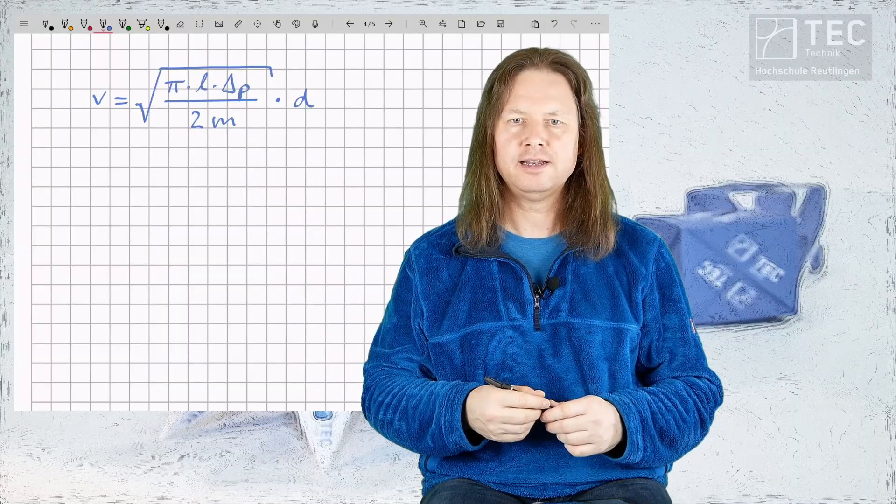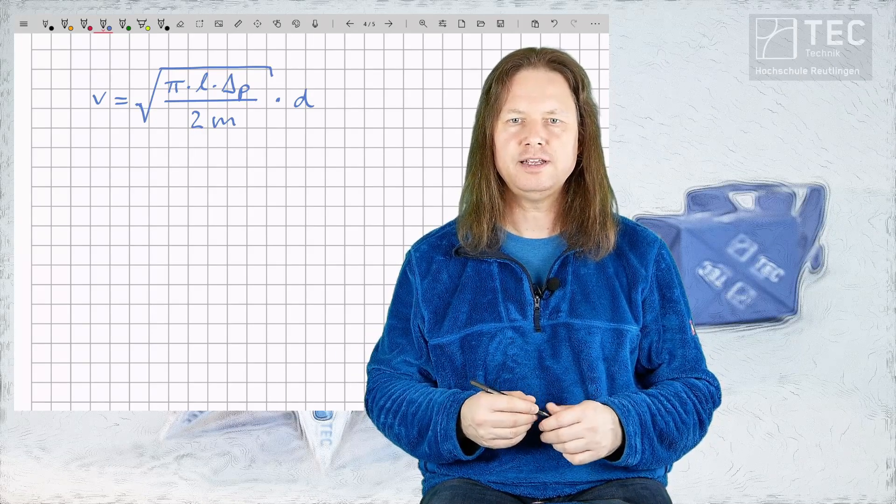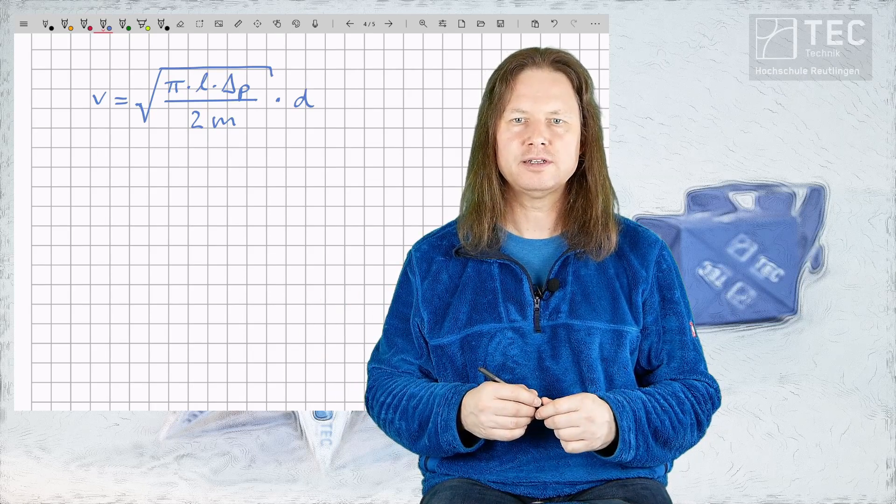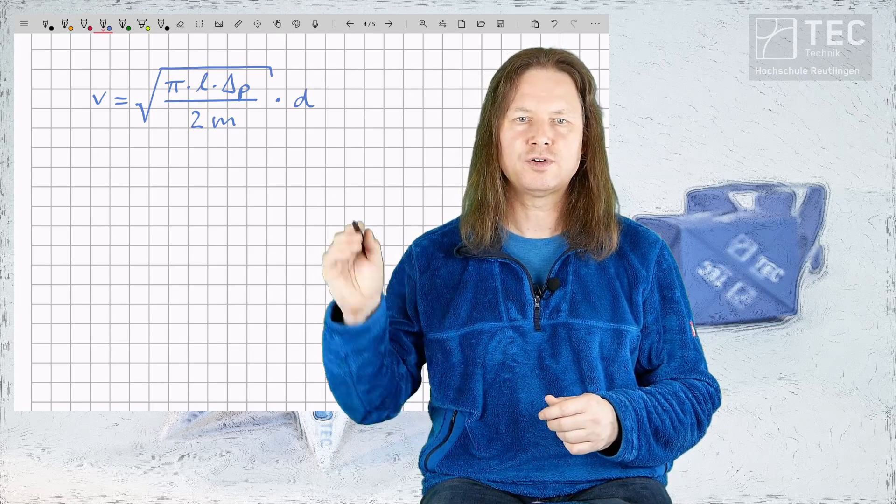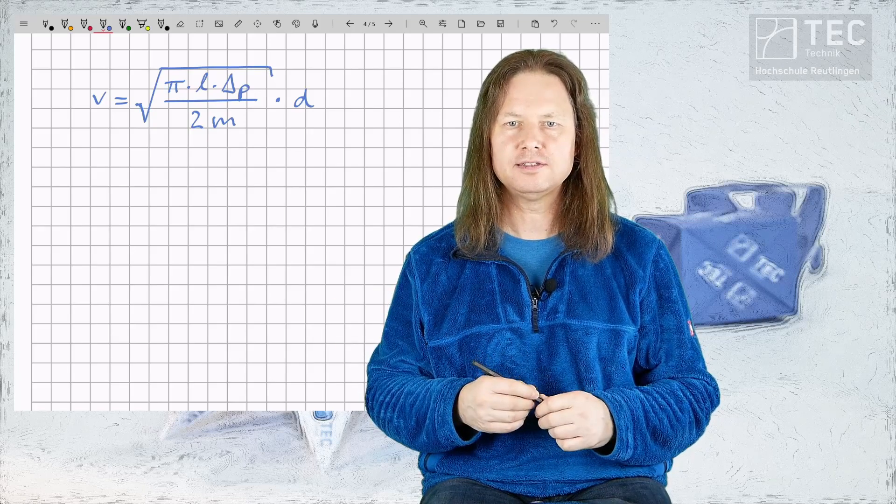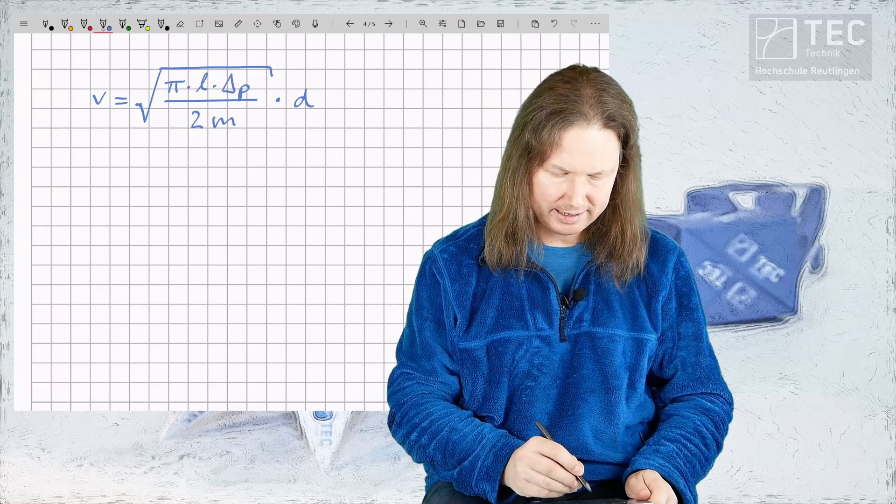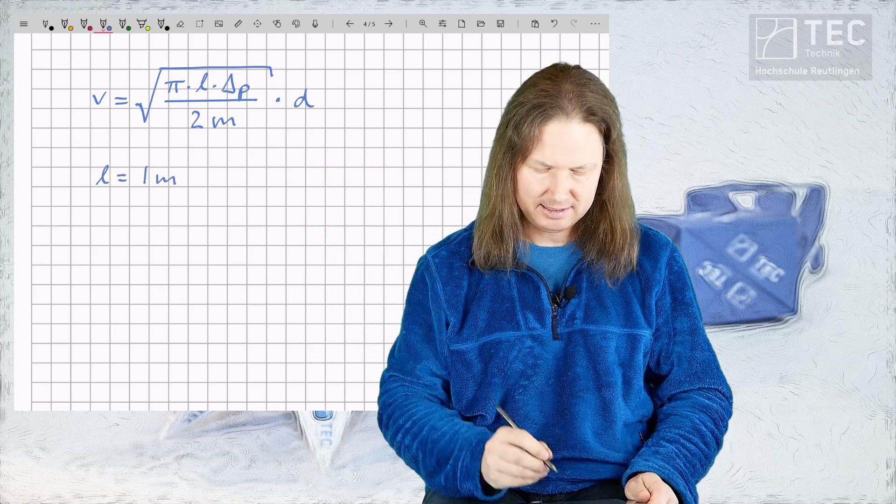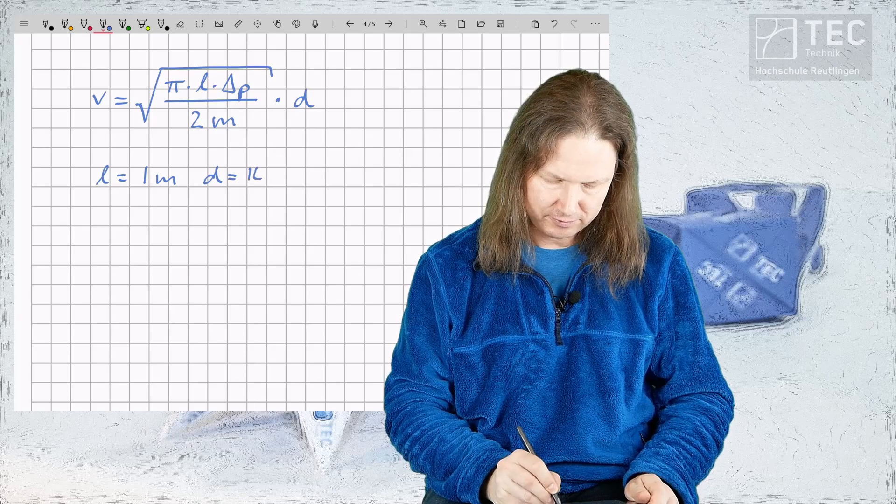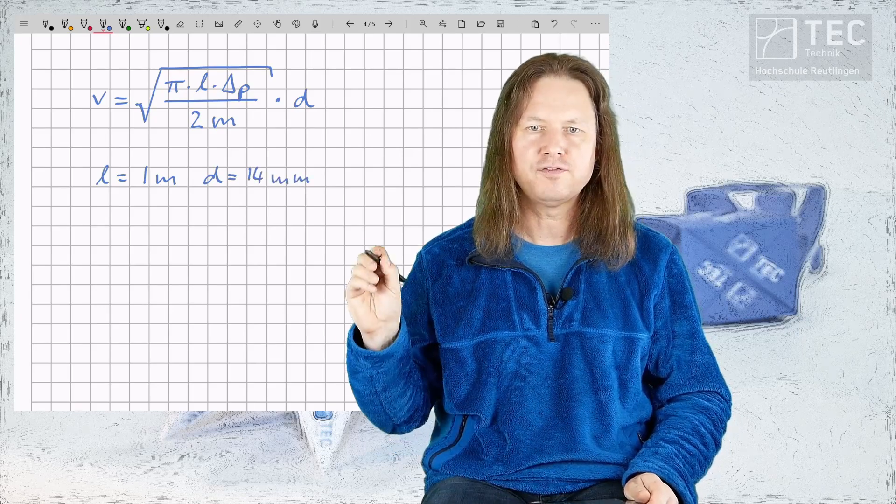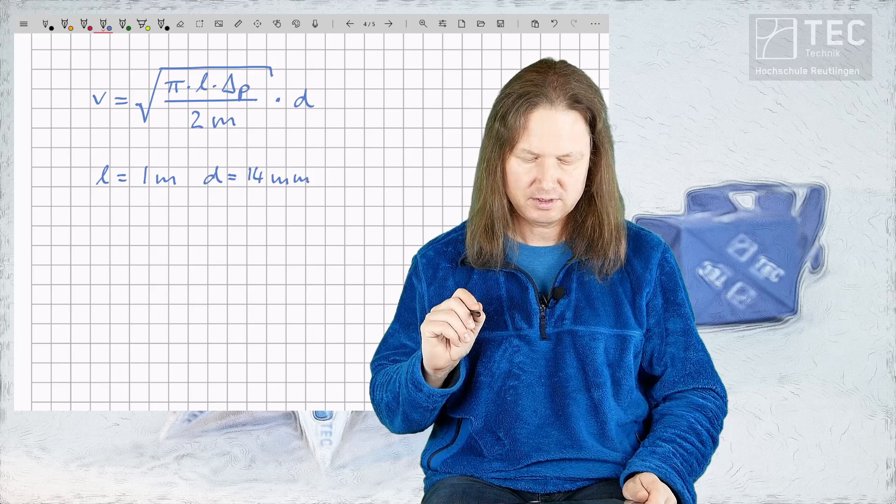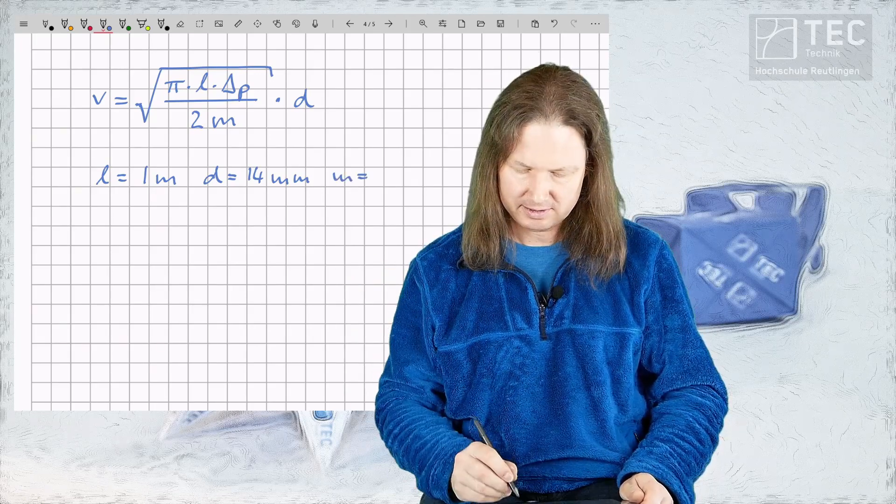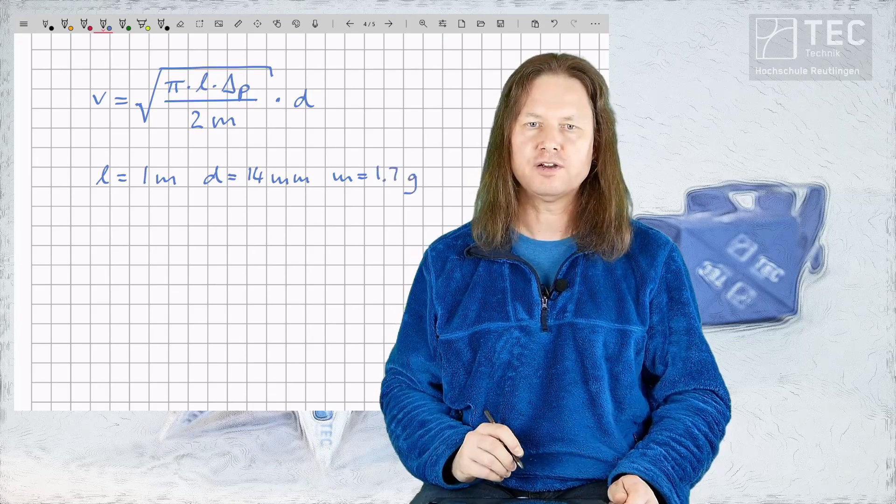This is an analytical expression that yields the muzzle velocity V in terms of several physical parameters. In order to determine V numerically we must find suitable values for all of these parameters. That's easy in some cases because we know that our blowgun length L is 1 meter. The blowgun diameter D is 14 millimeters. That's the caliber dot 55 blowgun I'm using here. And we know that the mass of the dart which I've measured with a precision scale is 1.7 grams roughly.